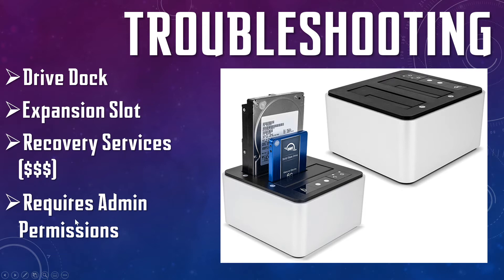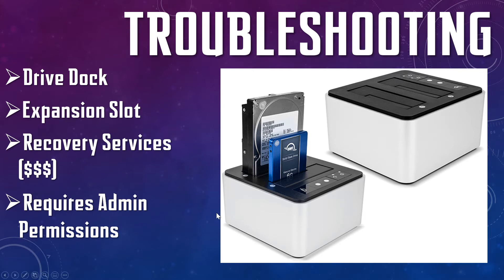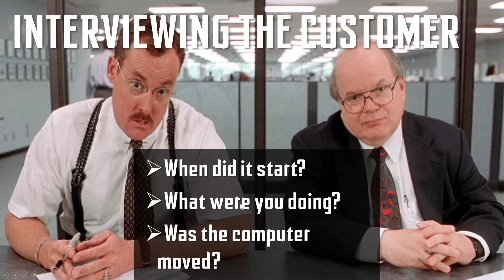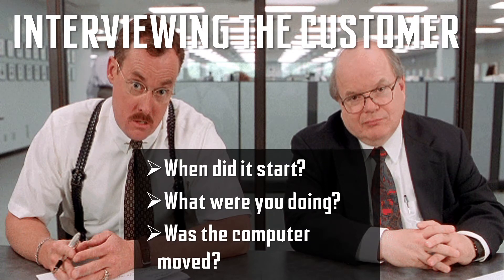Admin permissions issues are usually gotten around by using a different computer. If you have a Windows hard drive and can't get around the permissions on it, load it up on a Linux or Mac machine — they don't care, they'll ignore it and pull the files off. But if it's encrypted, this isn't going to work. If the files are encrypted, you're probably not getting them back. That's the whole point.